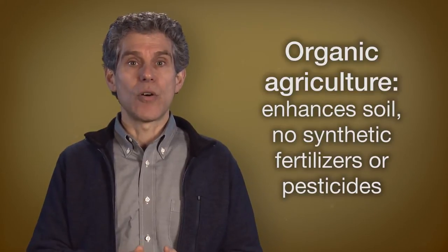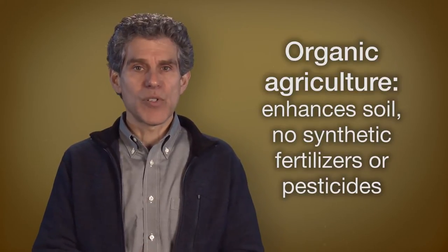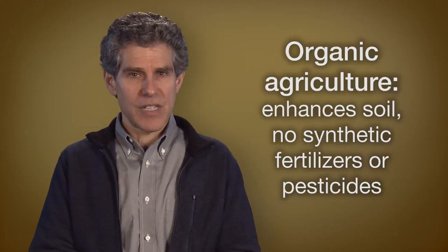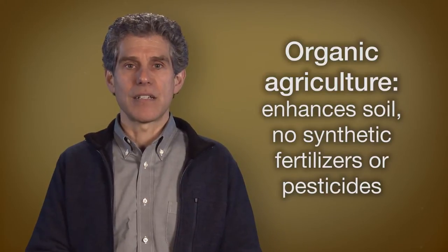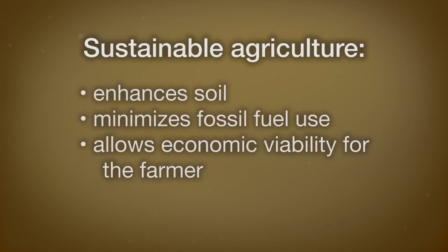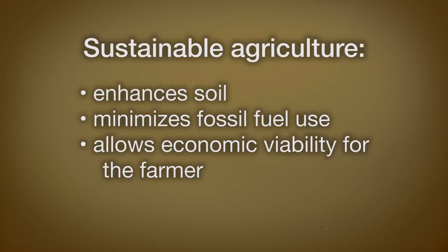Organic agriculture has the goal of enhancing the soil and producing a food crop without the use of synthetic fertilizers and pesticides. Sustainable agriculture fulfills the need for food and fiber while enhancing the quality of the soil, minimizing the use of non-renewable resources and allowing economic viability for the farmer. A farmer practicing sustainable methods wants to be able to continue agriculture on a given piece of land indefinitely.